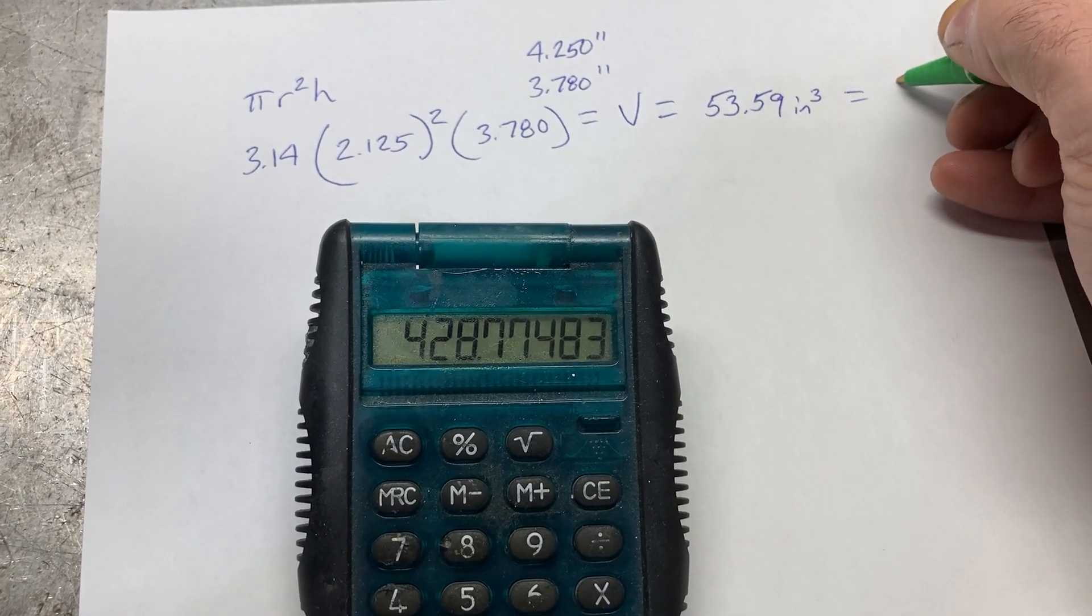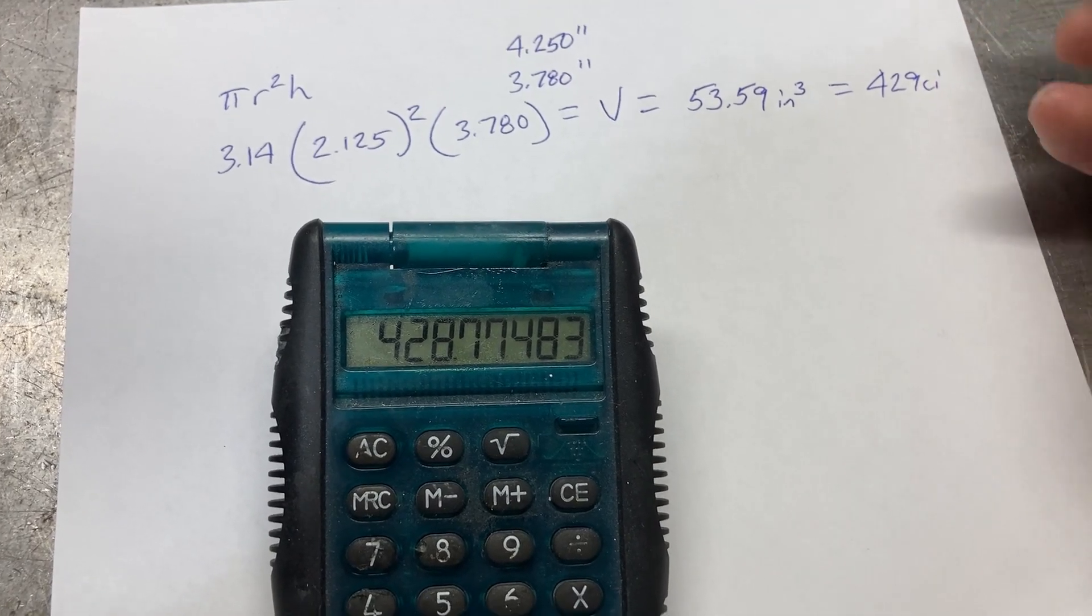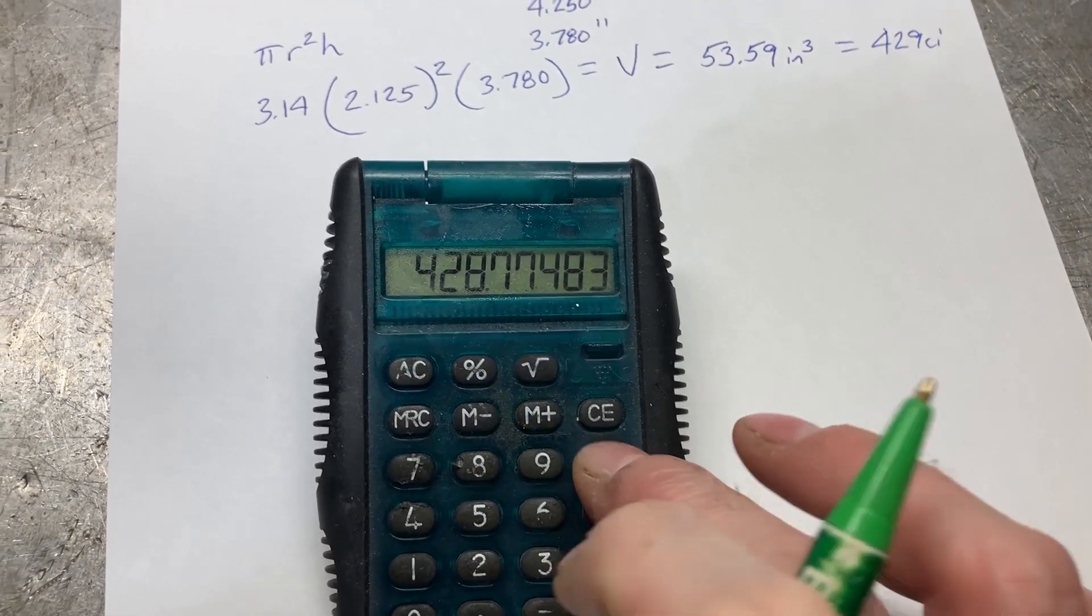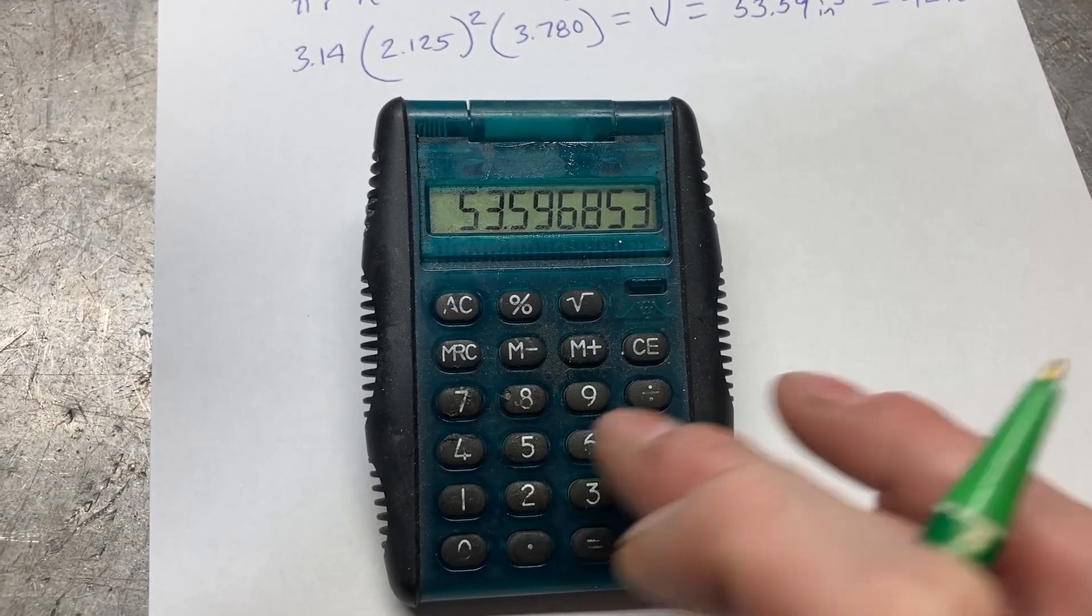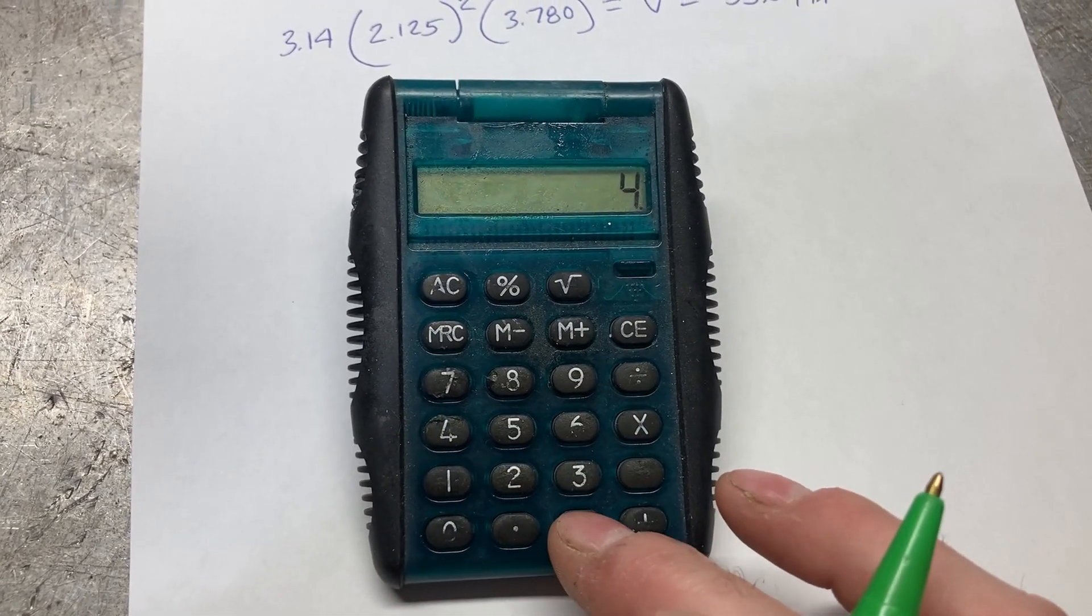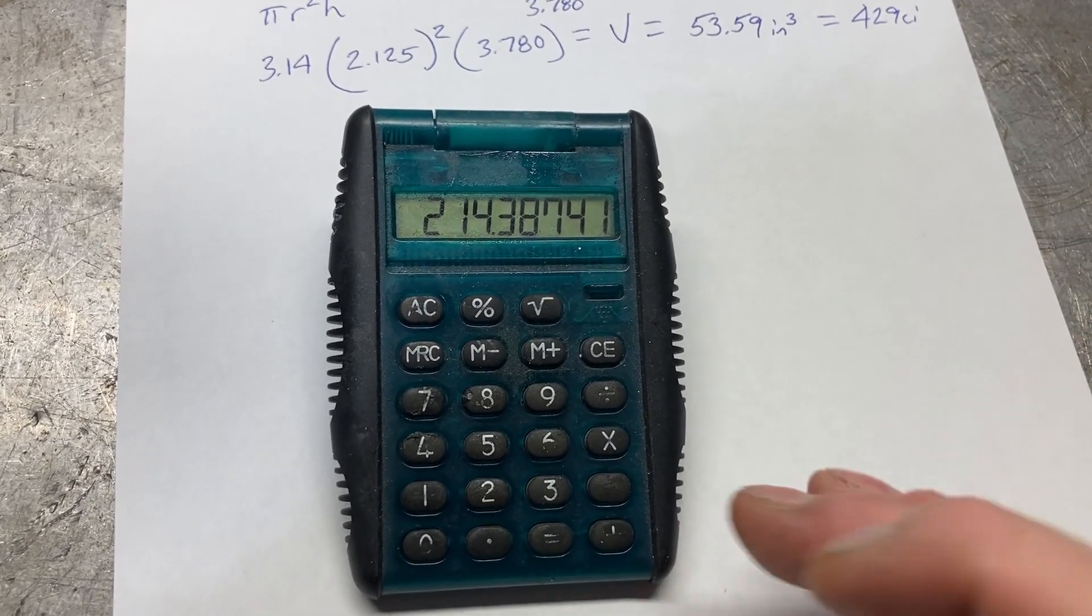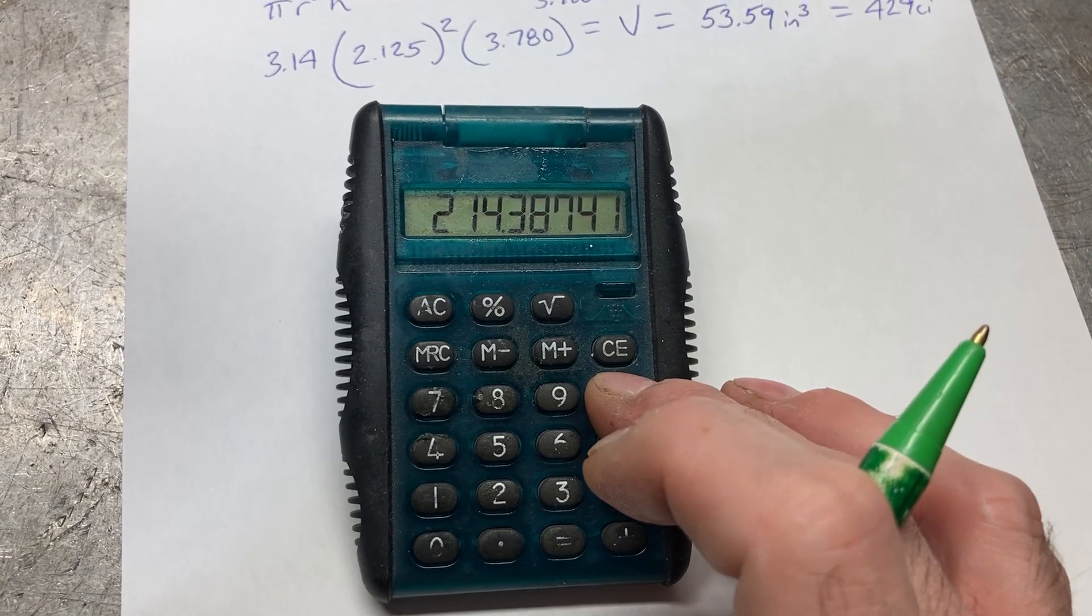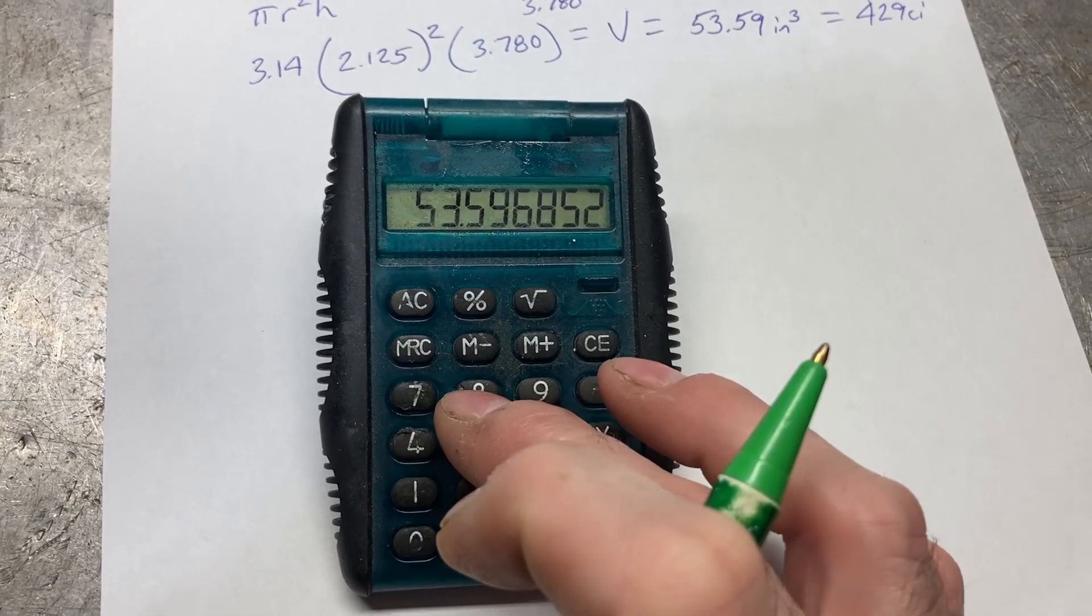Now if this was a four cylinder, you would obviously multiply by four, or six cylinder, ten cylinder, twelve cylinder, whatever. Another handy calculation is if you have a displacement in cubic inches, you can divide that by 61.02.